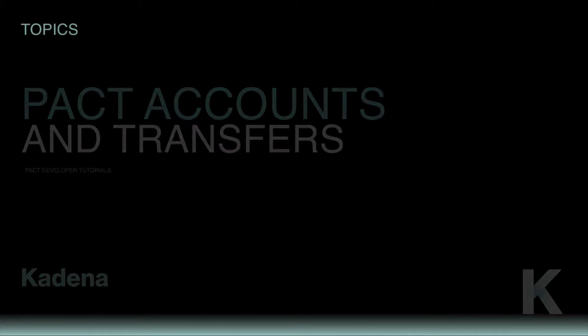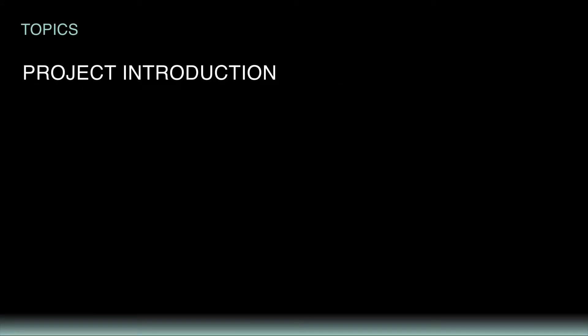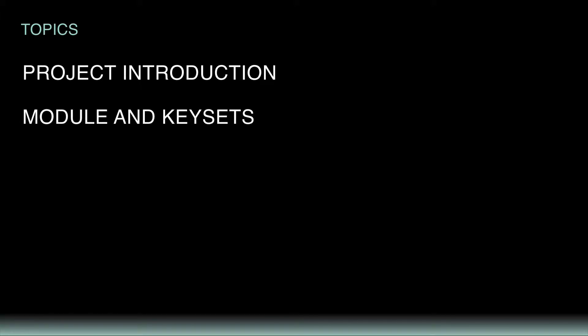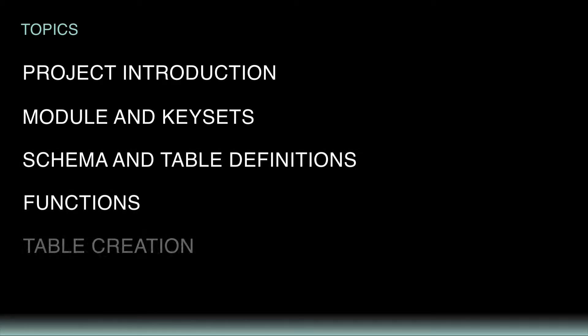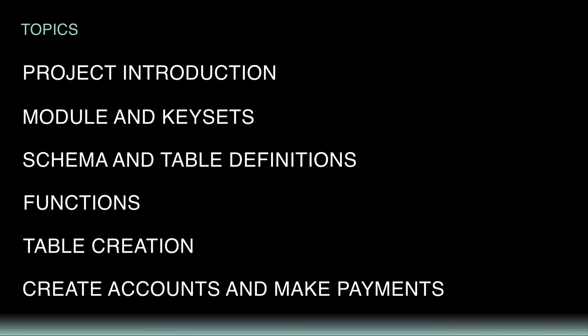Throughout this tutorial, I'll go over the following topics. First, I'll overview the project and help you get set up in your environment. From there, we'll build the smart contract using modules and keysets, schema and table definitions, functions, and table creation. We'll then use this code to create accounts and make payments between users. By the end, you'll be set up to implement accounts and transfers in your smart contracts.